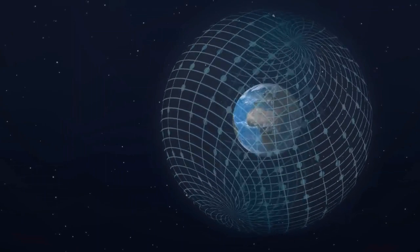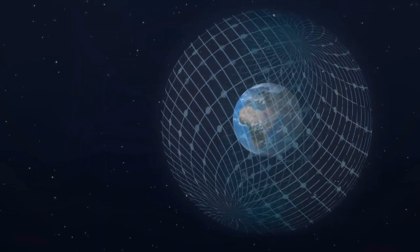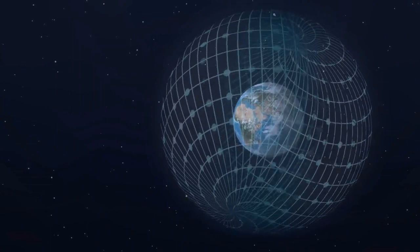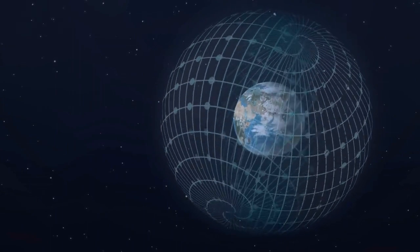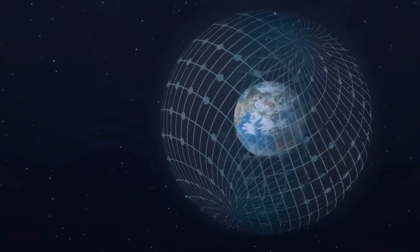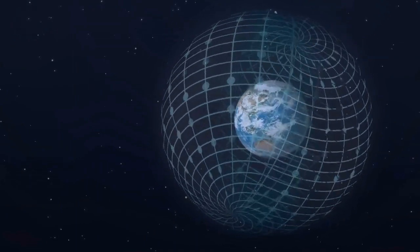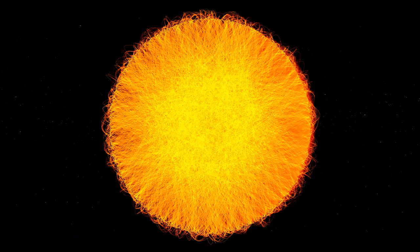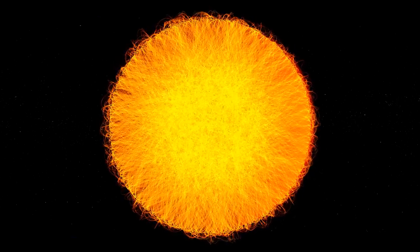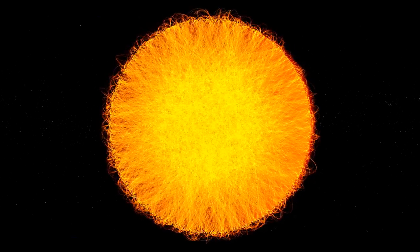The magnetosphere is a crucial protective shield surrounding Earth, created by its magnetic field. It serves as the first line of defense against harmful solar radiation and charged particles from the solar wind.